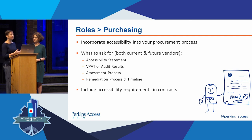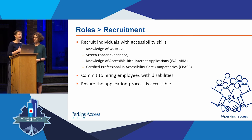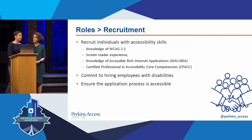For purchasing: when looking at third-party tools or software, think about accessibility. Ask vendors if they have an accessibility statement or a VPAT — a voluntary product accessibility template. Include accessibility in your contracts. For recruitment, if you're hiring someone, ask whether they have knowledge about accessibility, whether they know what WCAG is, whether they've used a screen reader, and whether they're familiar with ARIA. Even better is if they're a certified professional in accessibility core competencies. Commit to hiring people with disabilities — it's really unfortunate how much people underestimate people with disabilities. You can be a coder and have a visual impairment or be blind.